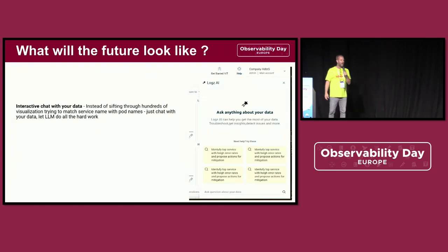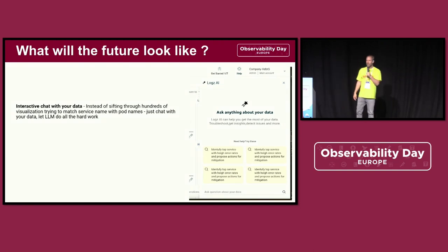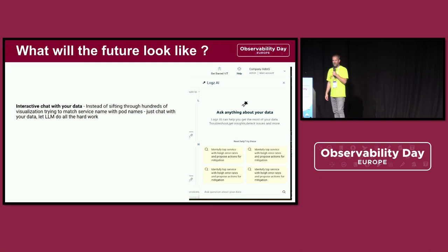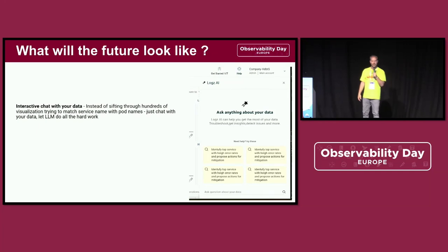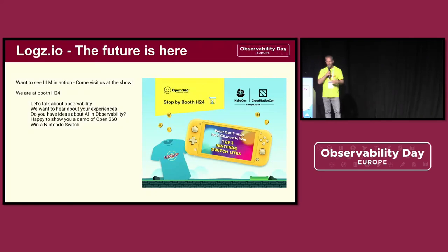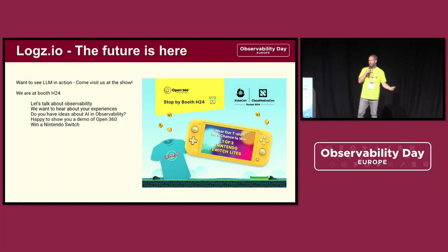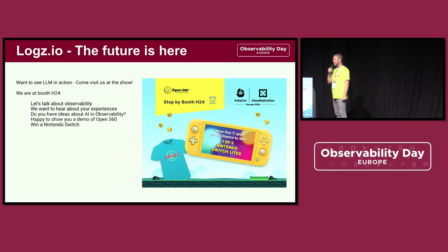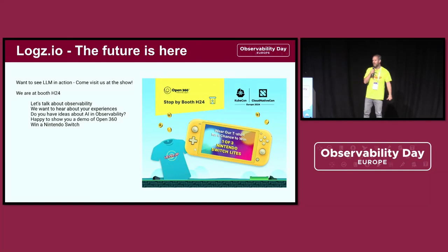We do think this is going to change. The ability to interact with your data and ask simple questions like: 'Post-deployment, is the state of my system the same, or do I have a degradation?' or 'What's anomalous across these hundreds of graphs?' — this is what we think the future looks like. In the next few months, not even a year, observability solutions are going to look completely different: a lot of chat-based communication and far fewer graphs. If you want to see the future, come check us out at booth H24. We're happy to demo it. Thank you very much.